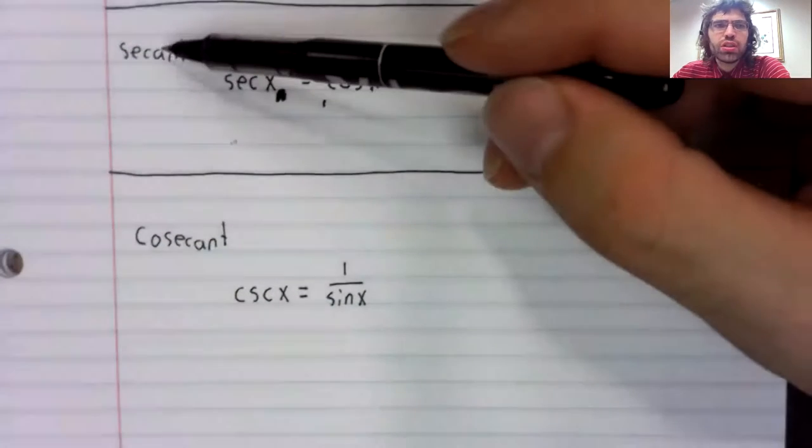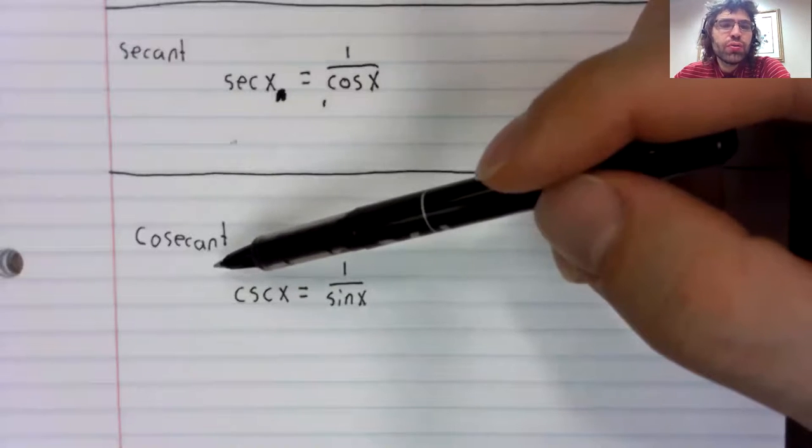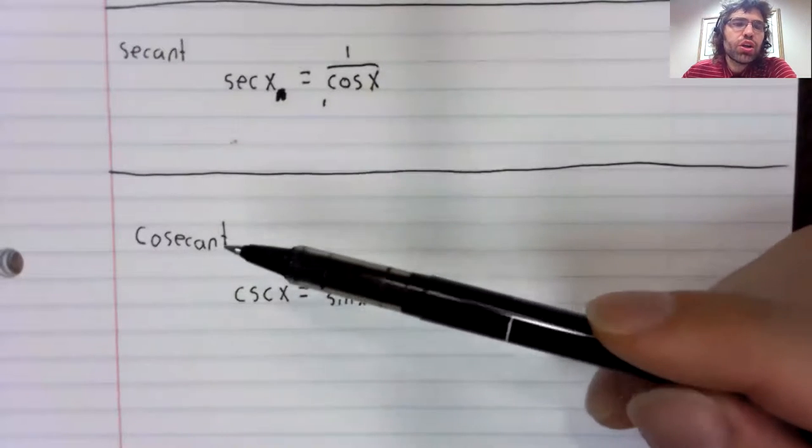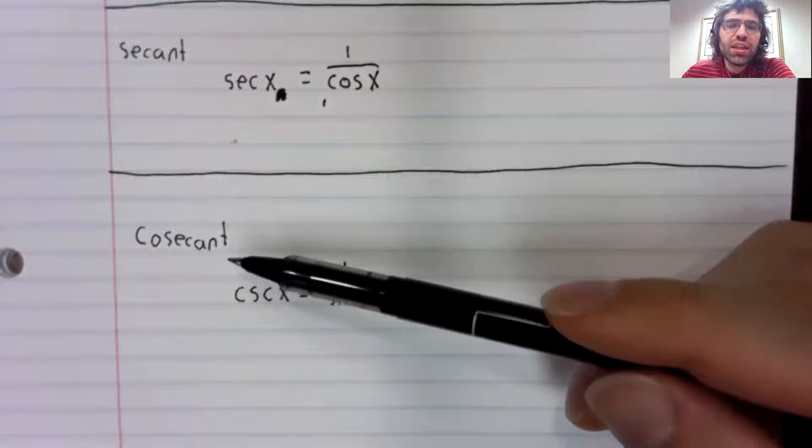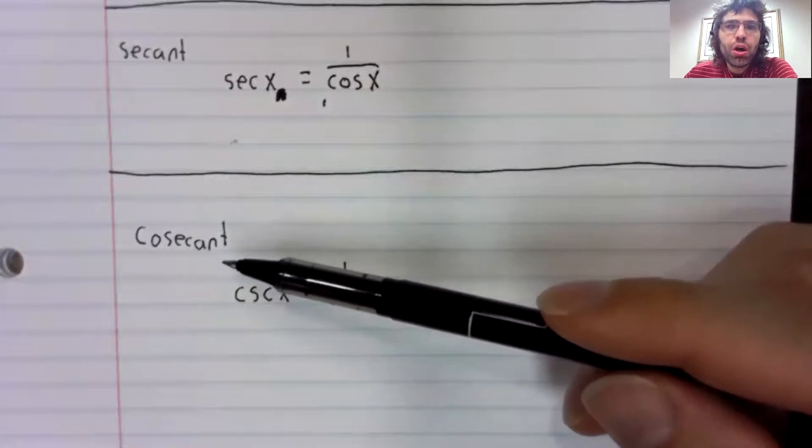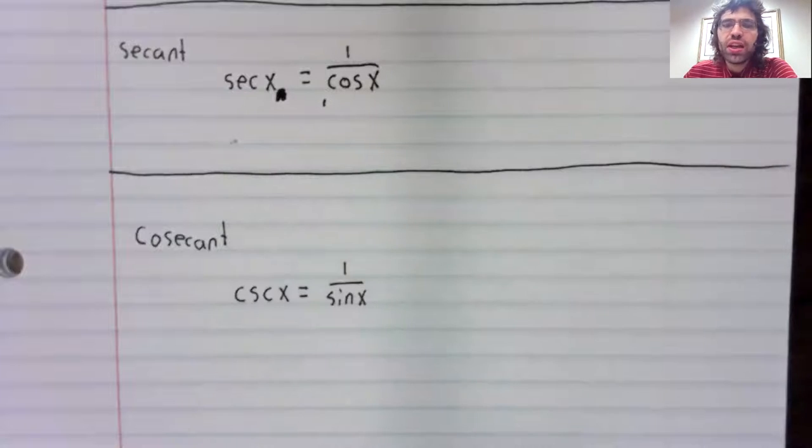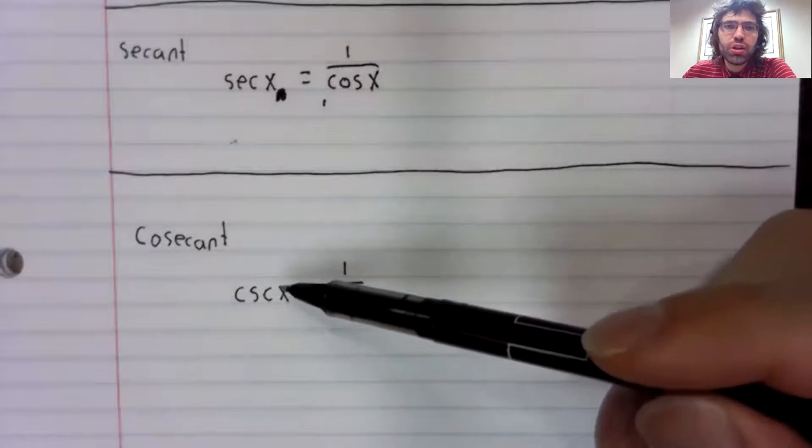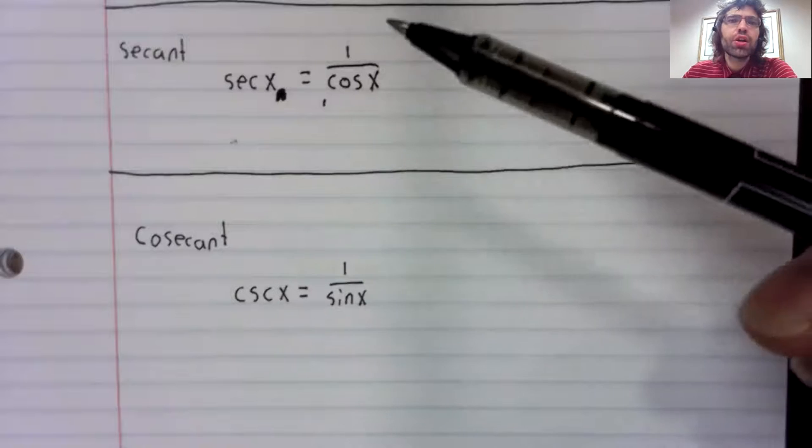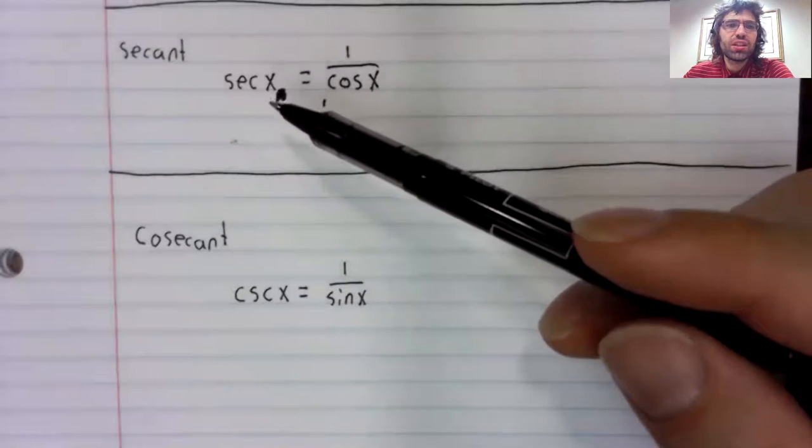Make sure not to get the secant and the cosecant confused. You might hear cosecant and think cosine. That's not the case, as you see. The sine goes with the cosecant. The cosine goes with the secant.